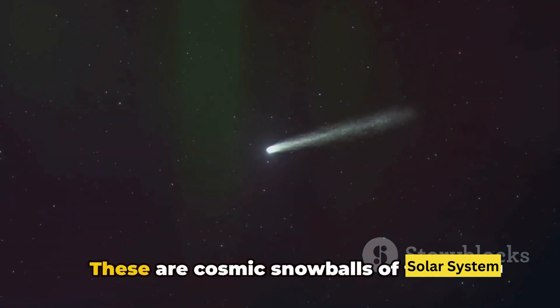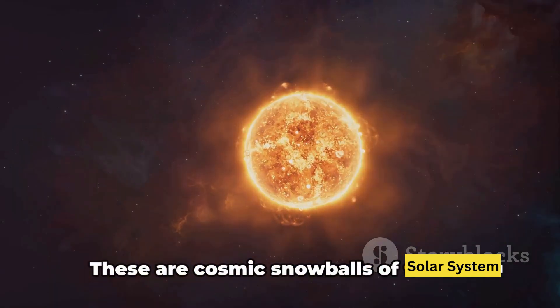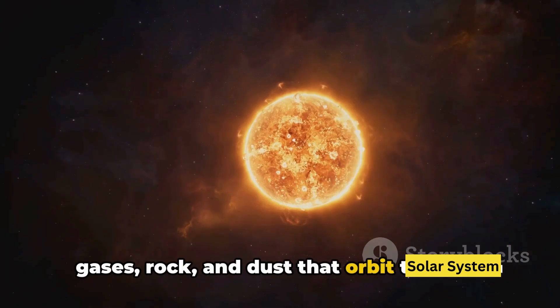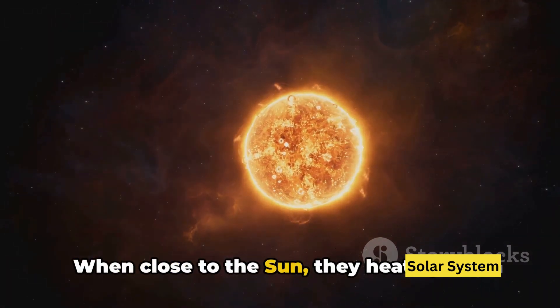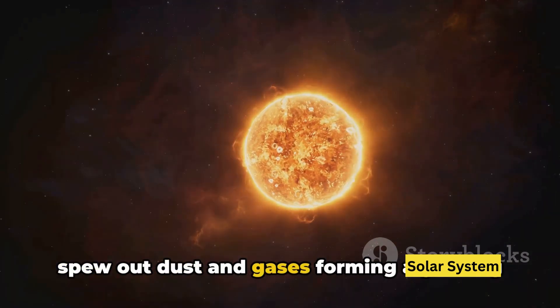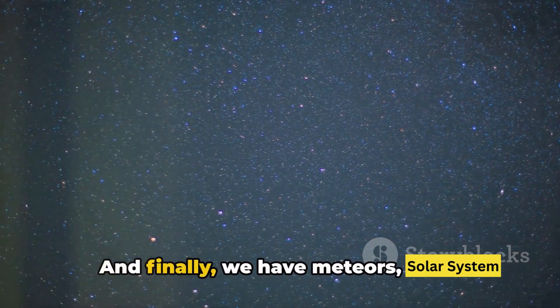Next, we have comets. These are cosmic snowballs of frozen gases, rock, and dust that orbit the Sun. When close to the Sun, they heat up and spew out dust and gases forming a glowing head and often a tail.